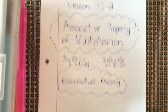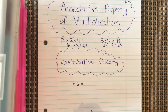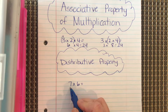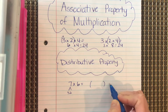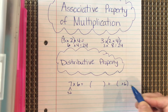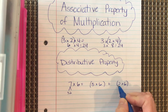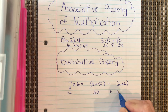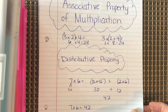The distributive property means if I have 7 times 6 — we learned this at the beginning of the year — I can break this 7 up into 5 and 2, leave my 6 the same, and break the 7 into 5 and 2. So 5 times 6 is 30 plus 12, which is a total of 42, and 7 times 6 equals 42.